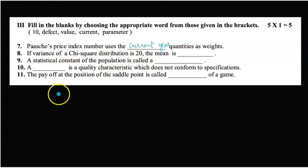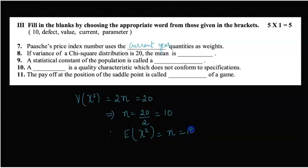Eighth: if variance of a chi-square distribution is 20, the mean is... We know that the variance of the chi-square distribution is 2n, and this equals 20. So n = 20 ÷ 2 = 10. We know that the mean of the chi-square distribution, E(χ²) = n. So the correct answer is 10.